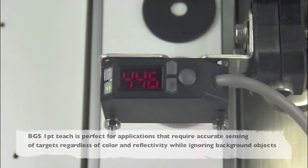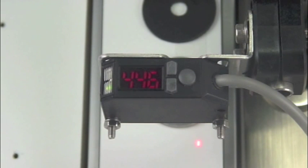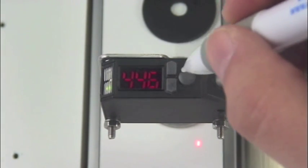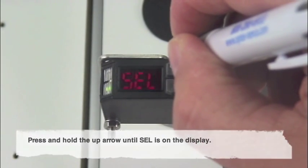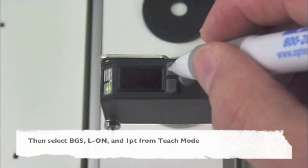I've placed the BGS DLT series sensor about 3 inches away from the background material. The first step is to press either the up arrow or the down arrow for a few seconds until SEL is on the display.